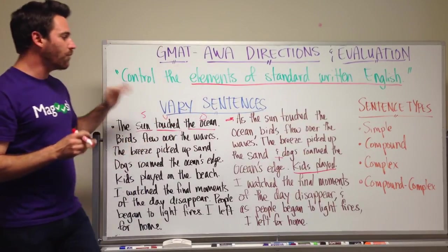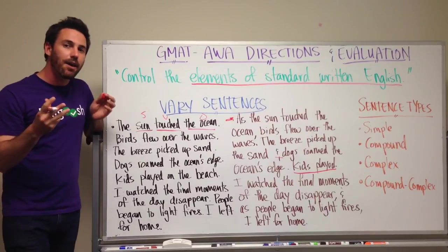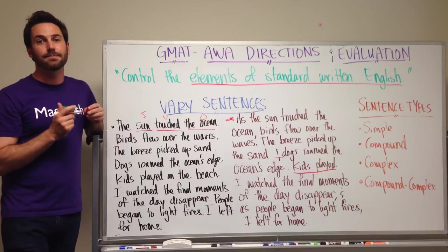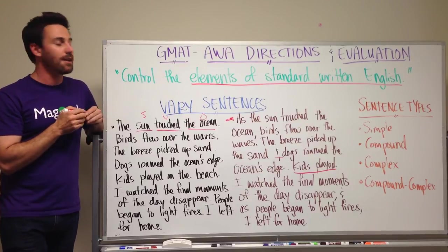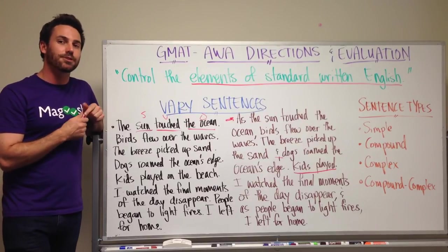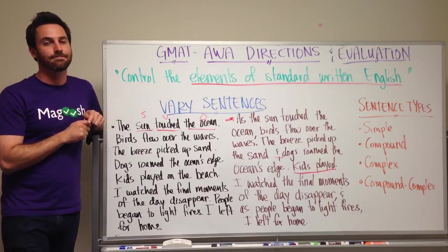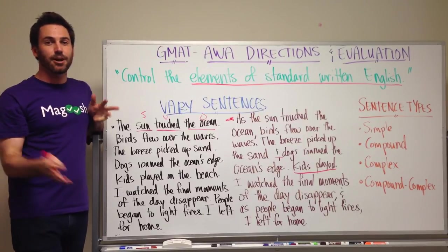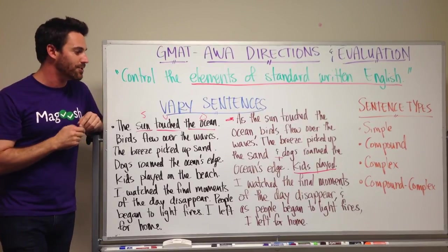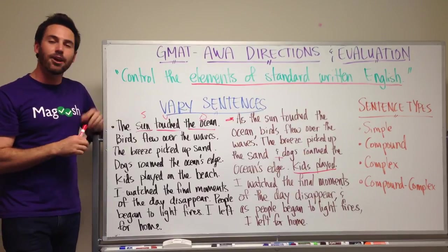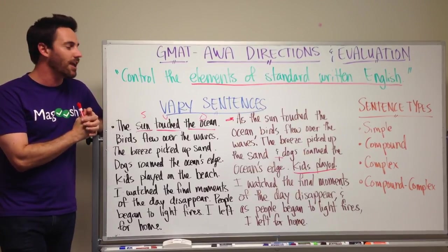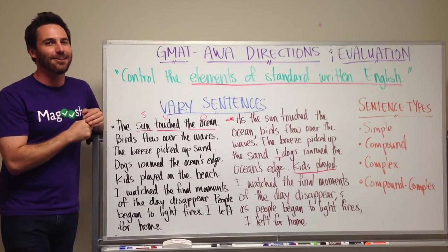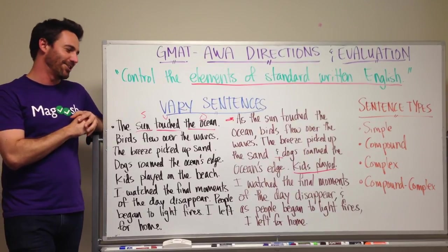So, when you're writing for the GMAT, think about having sentence variety in your paragraphs. Try to vary it as much as you can, because it will improve your style and improve your writing. I hope you found this useful. If you have any questions, leave a comment and we will respond to you. Head over to Magoosh.com/GMAT if you're looking for any other tips on the GMAT.